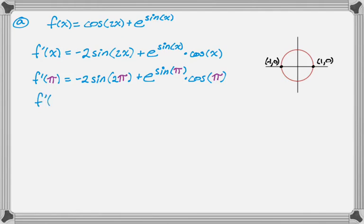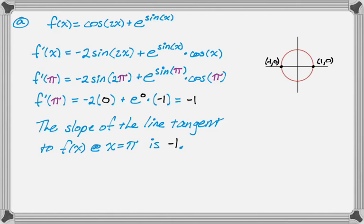Sine of 2π is 0, so negative 2 times 0, plus e to the 0 — since sine of π is 0 — and then cosine of π is negative 1. So that simplifies to just negative 1. The slope of the line tangent to f(x) at x equals π is negative 1. That's part A.